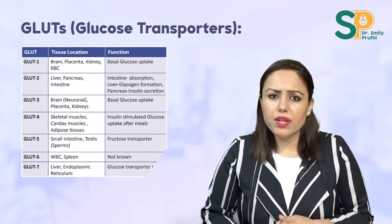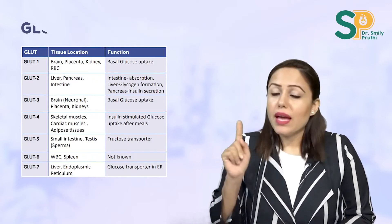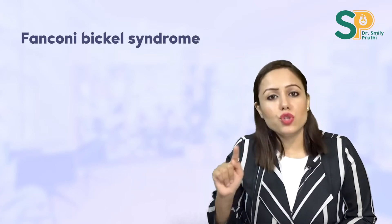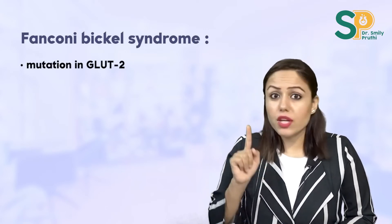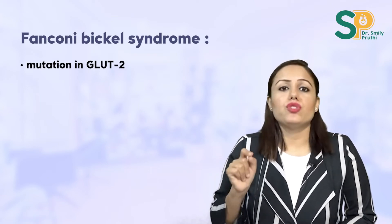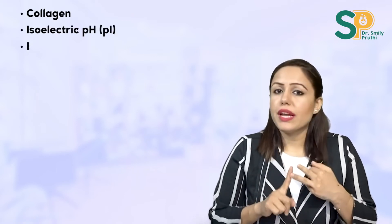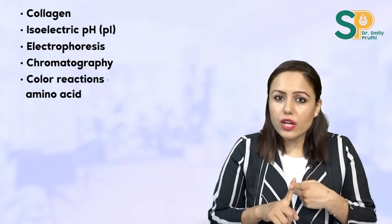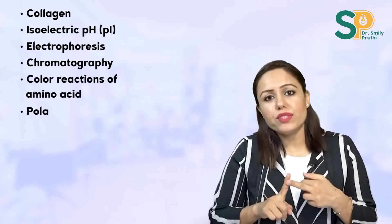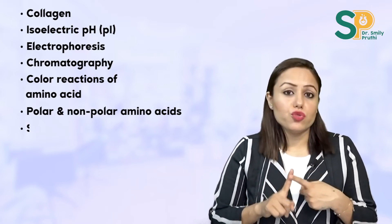Do GLUT transporters — very important; just one table and it takes five minutes to learn. Frequently asked: Fanconi-Bickel syndrome, which is a mutation in GLUT2, also known as type 11 glycogen storage disease — patients have fed-state hyperglycemia and fasting hypoglycemia. Then do collagen — very important. Also do isoelectric pH, electrophoresis, chromatography, color reactions of amino acids, polar vs. non-polar amino acids, and primary through quaternary protein structures.